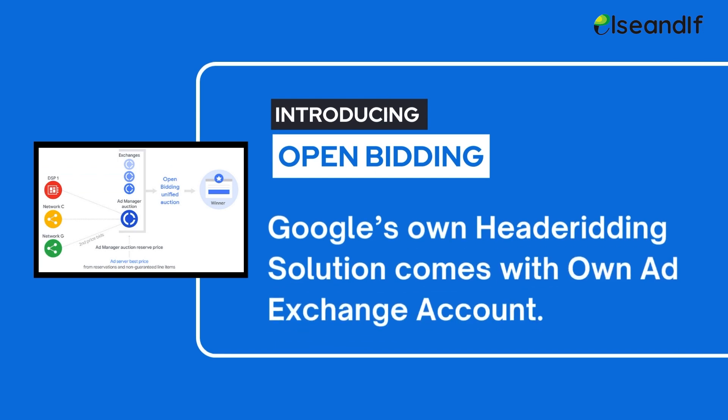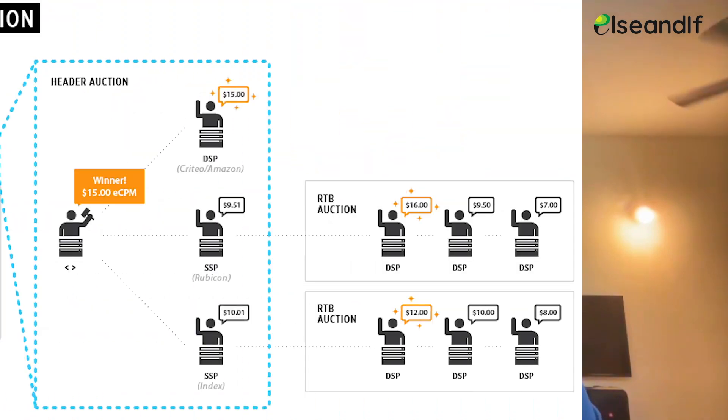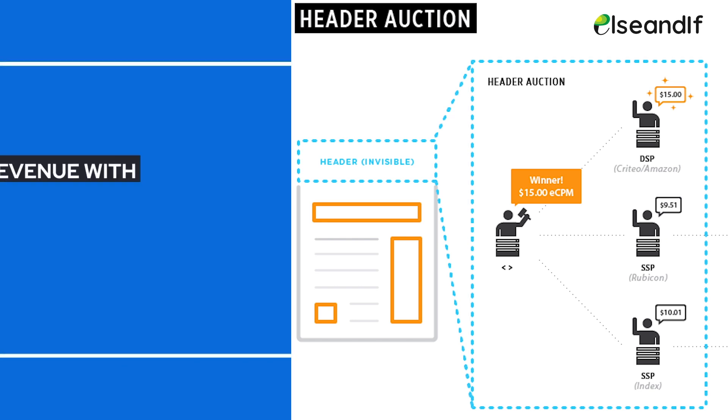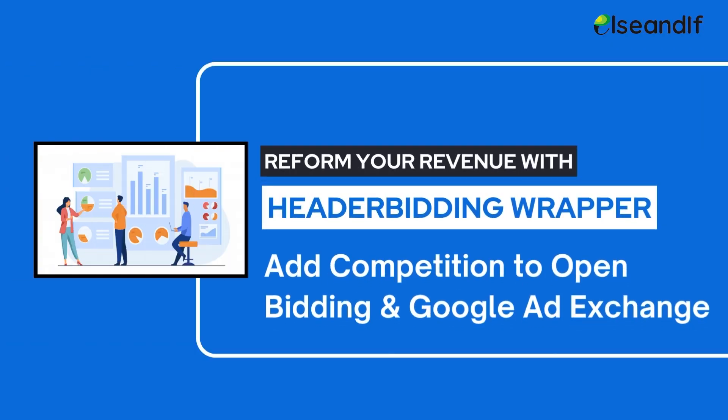If you are working with a reseller, kindly work with them to enable open bidding for your network — this will ensure more competition with your Google Ad Exchange and maximize your Ad Exchange CPMs. Open bidding works, but it is still within Google's ecosystem, so I recommend implementing header bidding in addition to open bidding. By introducing header bidding, you will put more competition to both open bidding and Google Ad Exchange.